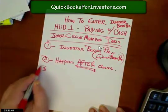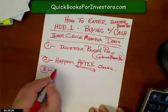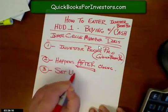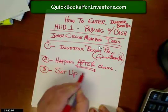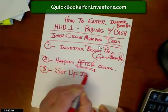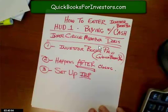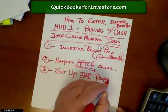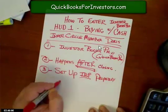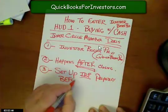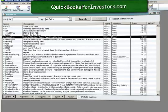Step number three: you have to set up your Investor Books Pro. You've got to set all that up properly before you can enter the transaction. You've got to set all the operations up.